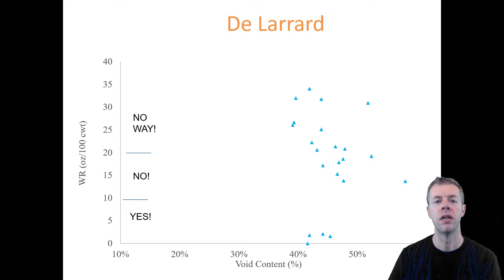Well, if we go on to another model, the de Larrard model. Again, they have a different approach, this different idea of this loosening. And again, we have things that are very similar void content that have very different performance in the test. Some are in the no way category. Some are in the yes category. Some of them need almost no water reducer at all. But they have very similar voids content. So again, it doesn't seem like this is that helpful.